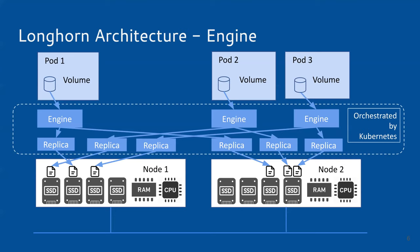A few more questions. Pods that consume a volume — can they only be scheduled to the nodes where replicas exist? No. The nodes that provide storage to Longhorn don't have to be the same nodes that consume the storage. The replica doesn't need to be on the same node as the consumer, but the engine has to be on the same node. Got it. And are you constrained by the size of the smallest disk when provisioning new volumes? Yes.